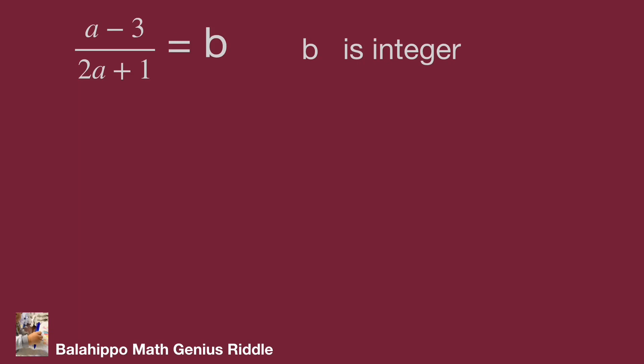So multiply 2 on both sides of the equation. The equation becomes 2b equal to 2 times a minus 3 over 2a plus 1, equal to 2a minus 6 over 2a plus 1.